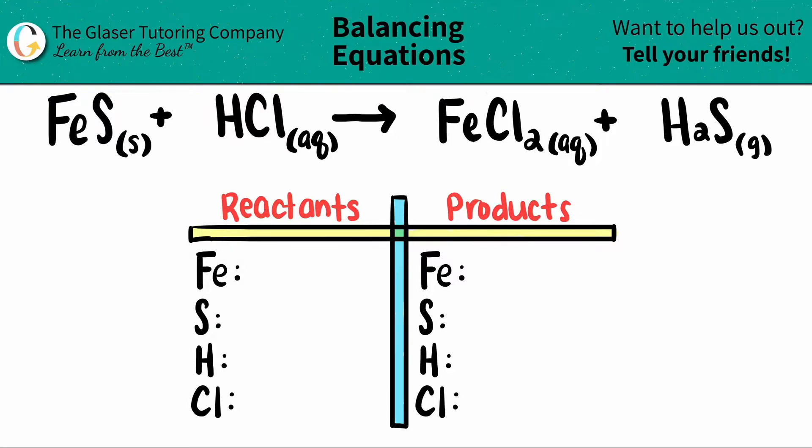Let's start with the left-hand side. For the iron, aka the Fe, I don't see any subscripts here, so that means that I have one iron. For the sulfur, same thing goes. I don't see any subscripts, so that means that I have one. The same thing for the hydrogen and the same thing for the chlorine. I don't see any subscripts, so one hydrogen and one chlorine, so I could just write both of those right here.